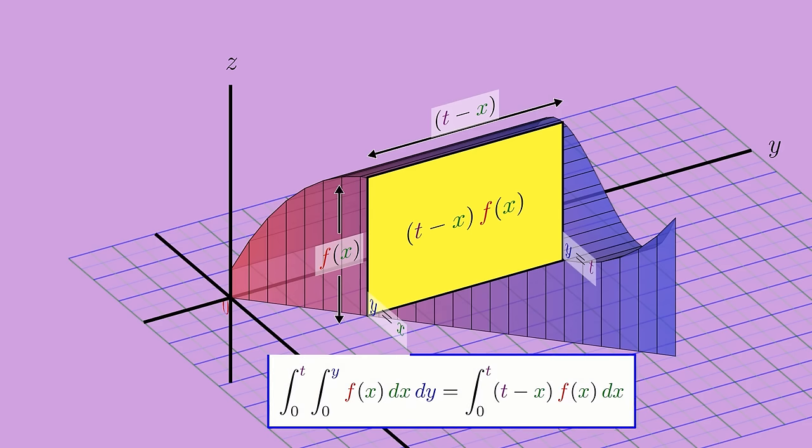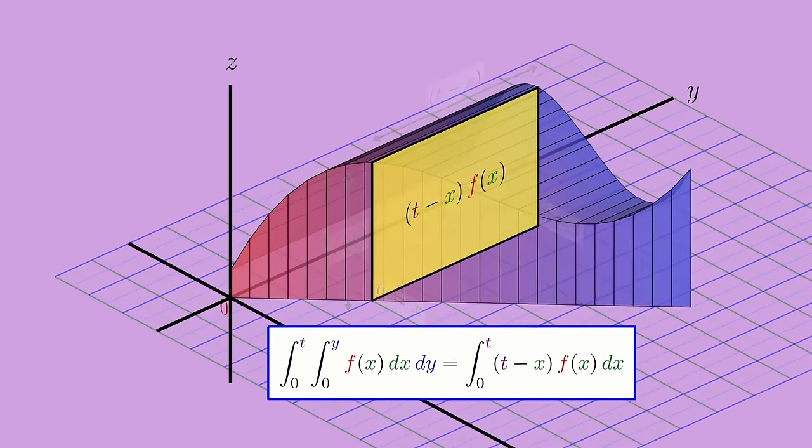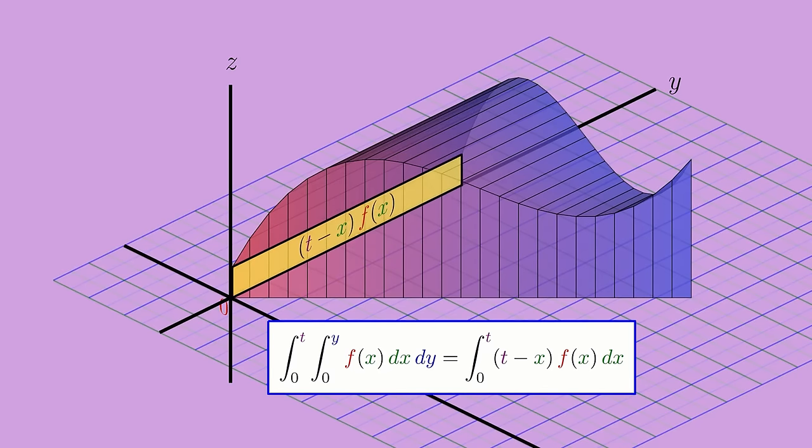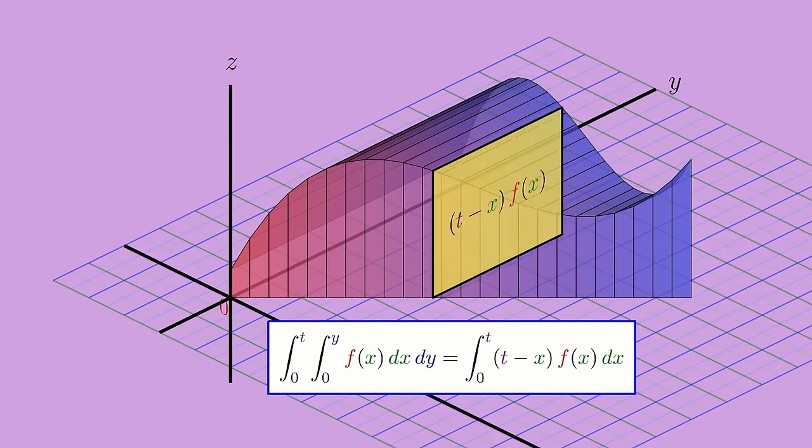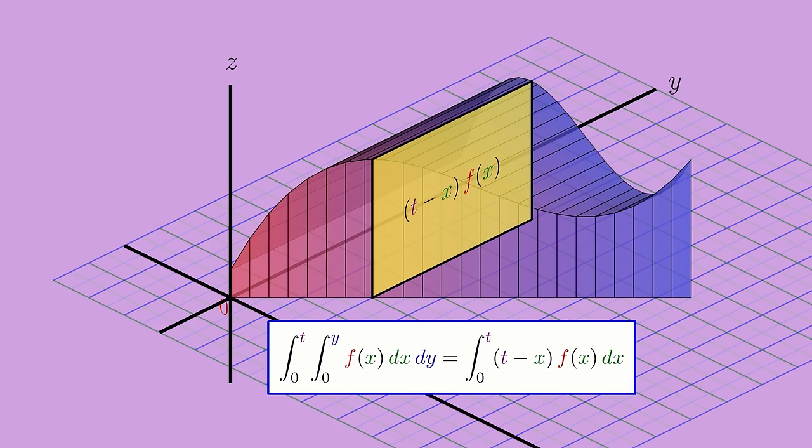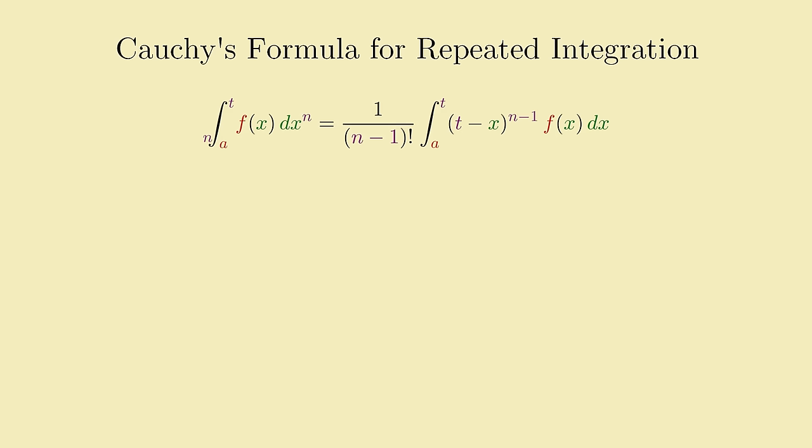And if you happened to watch the previous video, you'll know that integrals are also compressible, meaning you can represent any repeated nesting of definite integrals as an expression involving only a single integral. The way to do this is captured in Cauchy's formula for repeated integration, which I covered in detail last video.